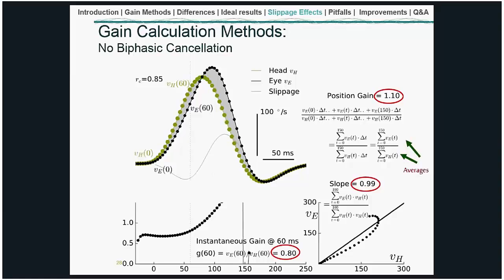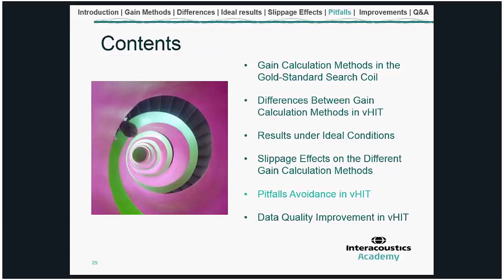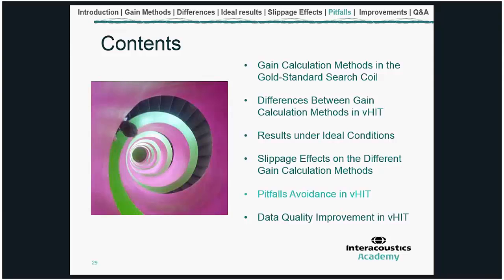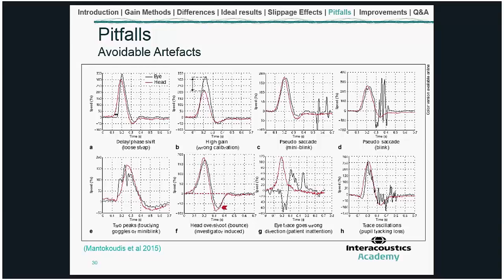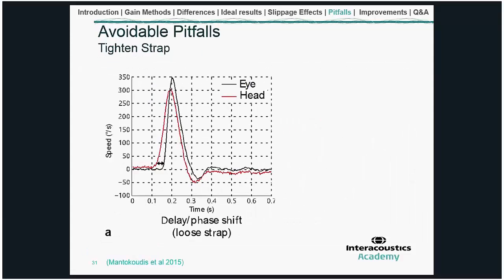In the next sections I discuss pitfalls in vHIT testing and how to avoid them. There is a nice paper by Mantokudis who categorized different pitfalls, most of which are avoidable. One pitfall is a delay or phase shift between head and eye movement. If you see such a tracing, it is probably due to a loose strap on the goggles. The simple solution is to tighten the strap, remove and replace the goggles, and the phase shift should vanish.